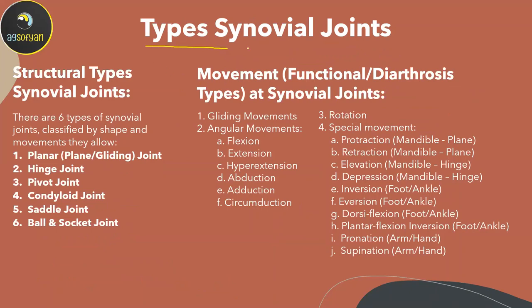There are six structural types of synovial joint: plane (or planar/gliding) joint, hinge joint, pivot joint, condyloid joint, saddle joint, and ball-and-socket joint. All synovial joints are diarthrosis — freely movable.